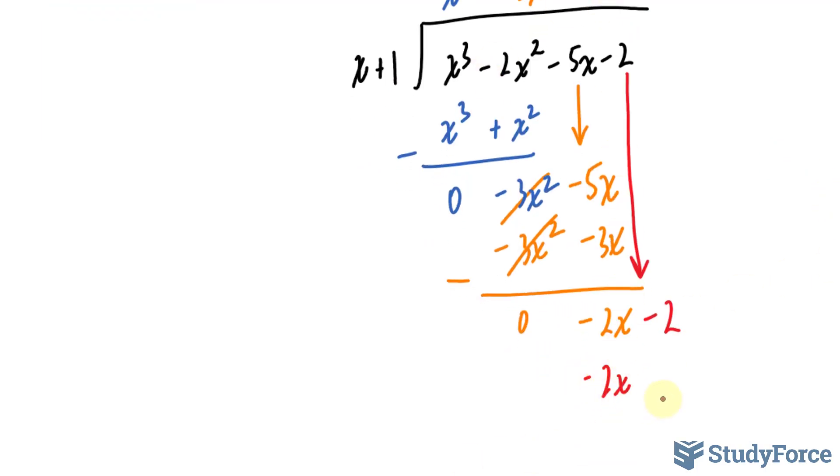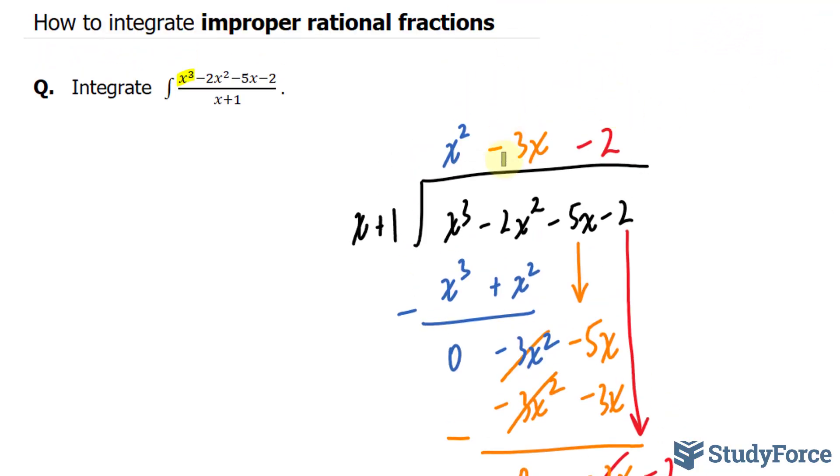And negative 2 times positive 1 is negative 2. Subtracting this term with this term gives us 0. And subtracting negative 2 with negative 2 gives us 0 as well. We have a remainder of 0. This will serve as our quotient.